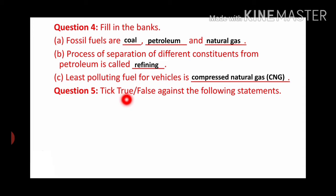Now Question Number 5 is: Tick true or false against the following statements. First one is: Fossil fuels can be made in the laboratory. The answer is false, because fossil fuels are formed from dead and decaying materials naturally under high pressure and temperature.